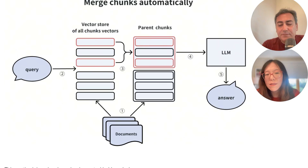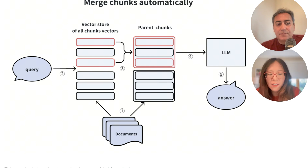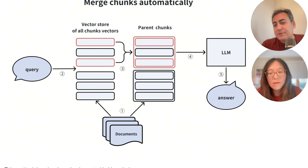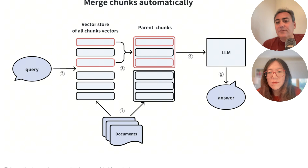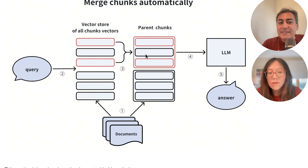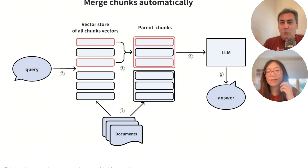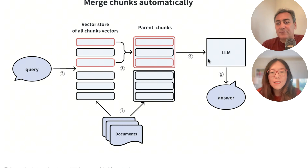Why do we want to do this? You might wonder if it's essentially the same information — whether you pass three child chunks or pass them as a whole. But look at this example: if I search for child chunks and get two specific ones, passing just those two to the LLM means it doesn't have enough context. When I look at their parent chunk, the parent chunk may have extra information not necessarily part of the retrieval but which gives more context. When I pass the parent chunk to the LLM, it can generate a better answer.